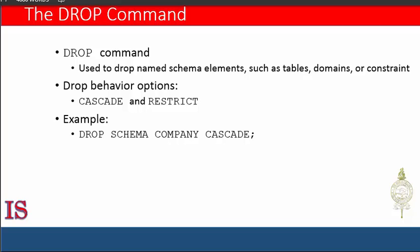There are two drop behavior options: CASCADE and RESTRICT. For example, to remove the company database schema and all of its tables, domains, and other elements, the CASCADE option can be used, as shown here: DROP SCHEMA COMPANY CASCADE.